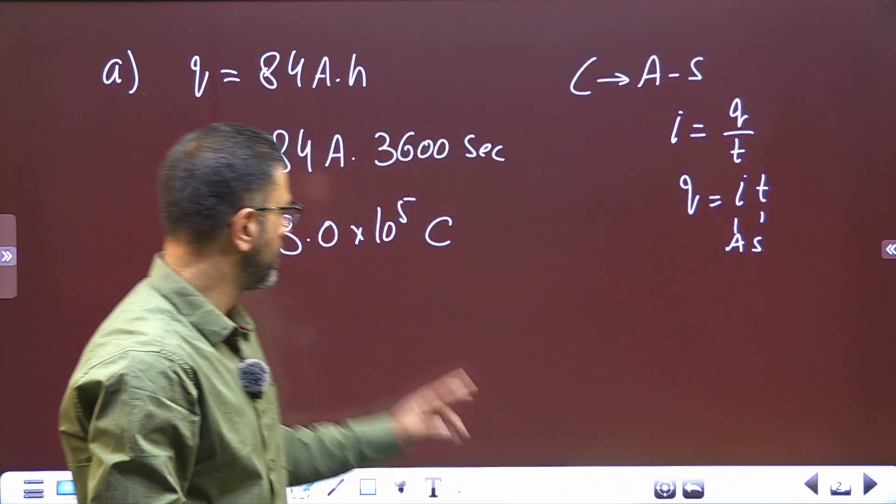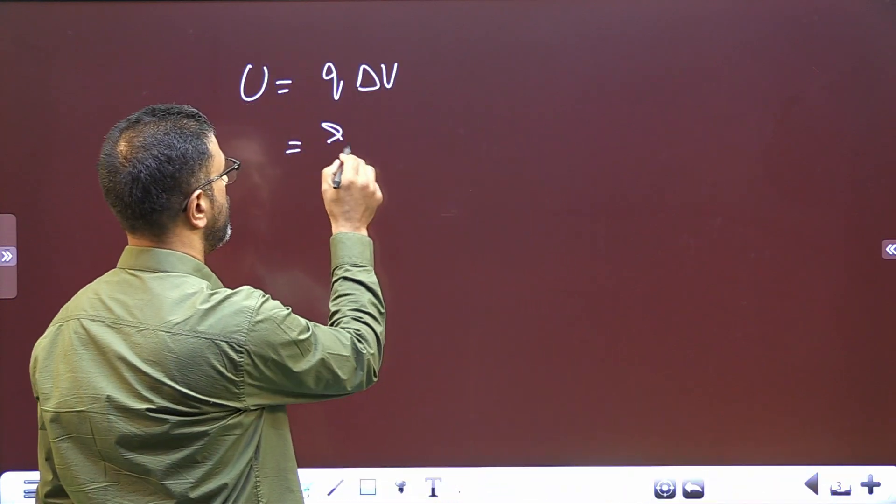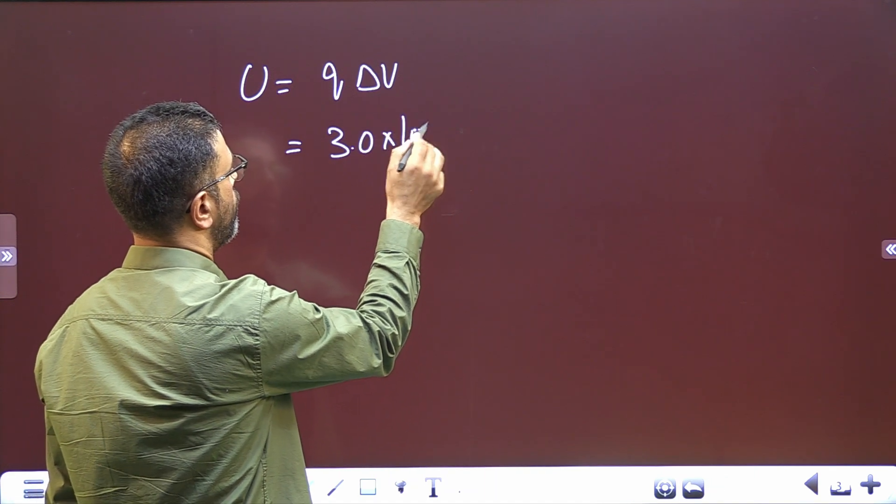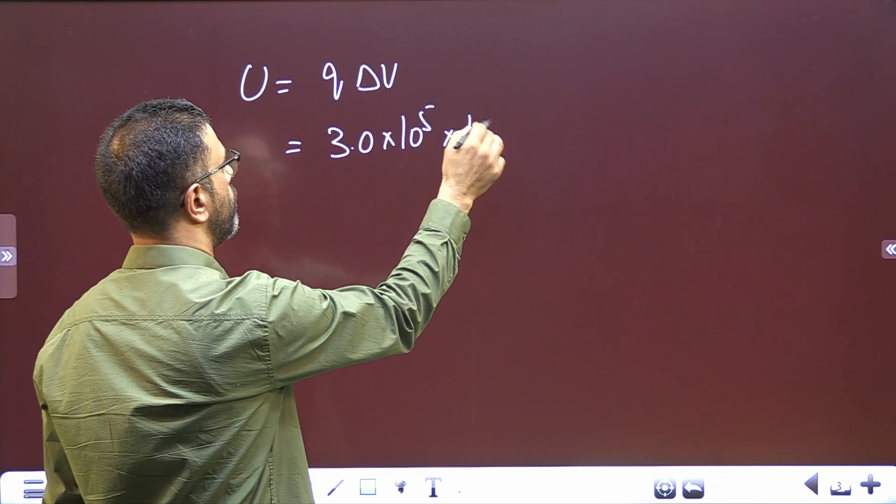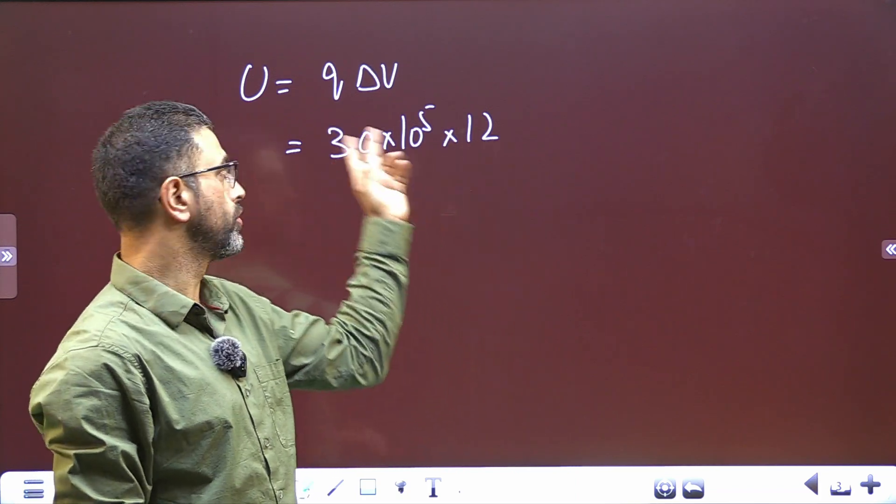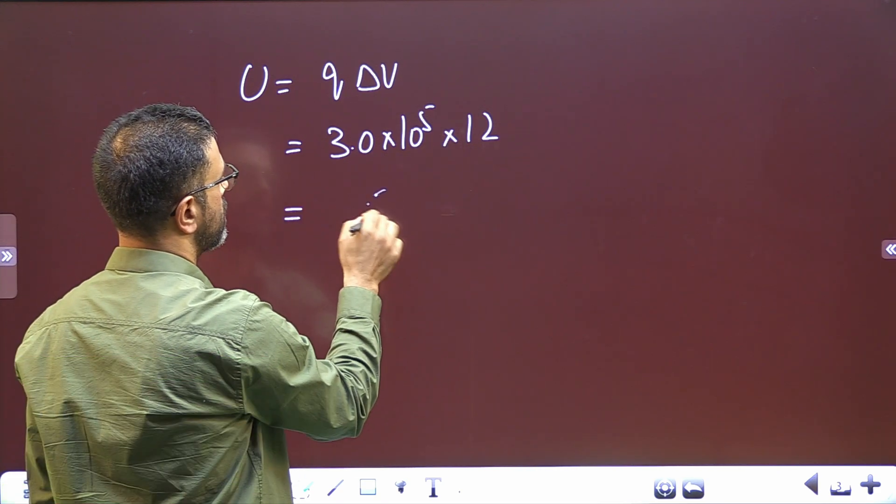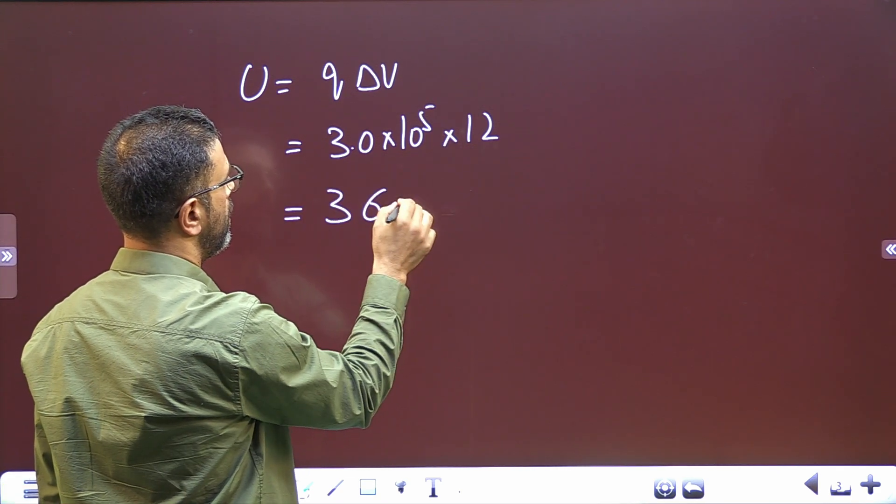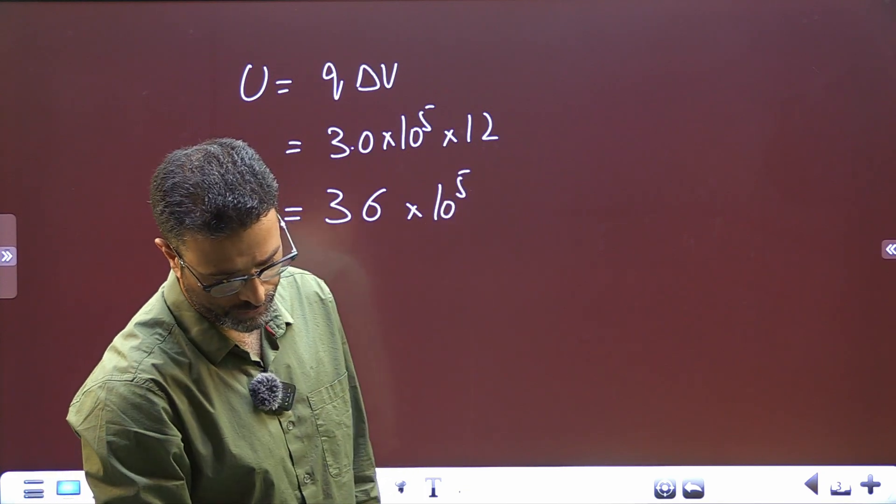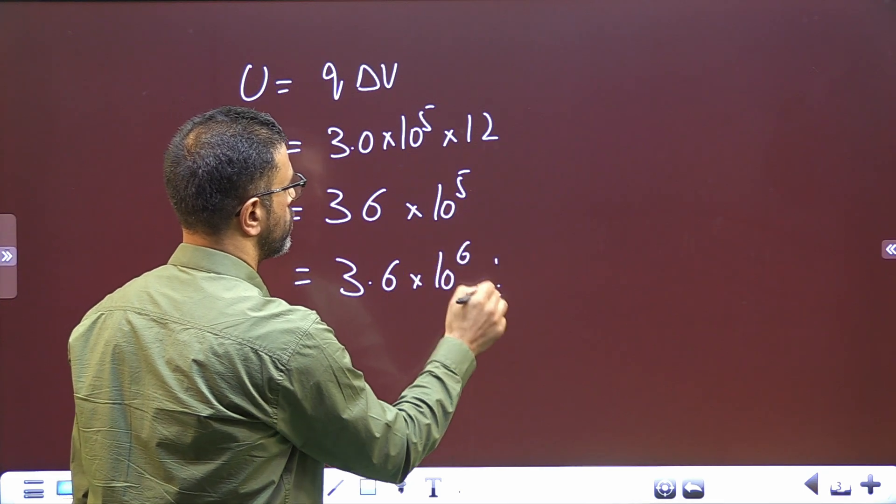It's 3.0 times 10 to the power 5, and the potential change is 12 volts. This is in coulombs, this is in volts, so the unit of energy will be joules, all in SI system. So this is 36 times 10 to the power 5 joules, or we can write 3.6 times 10 to the power 6 joules.